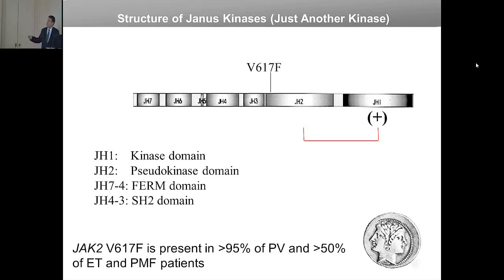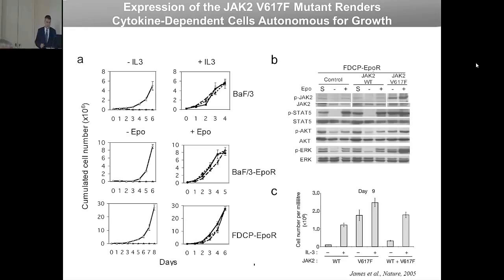The mutation was actually in the pseudokinase domain, and somehow this leads to activation of the kinase domain. Judith Starck in my lab made the first cDNA of this V617F mutant and showed that cells that normally should not grow — hematopoietic cells in the absence of cytokines such as IL-3 or EPO — now did grow. So it was a constitutive proliferative signaling. In Western blot experiments, one can see that normally phosphorylation of JAK and STAT5 depends on cytokine stimulation.